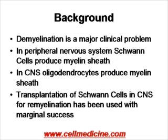Why do we need remyelination? The problem is there are many diseases, for example multiple sclerosis, where demyelination occurs. The myelin sheath acts as an insulator for neurons to be able to transmit signals, and when it is destroyed or damaged, signals do not transmit properly between axons.